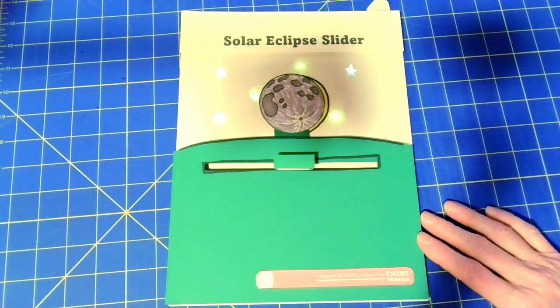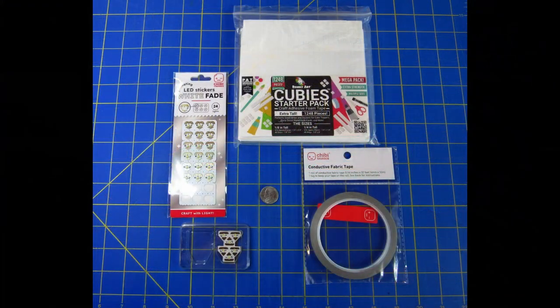For this project I used Chibitronics animating white fade stickers as well as their regular white LED stickers. I also used foam tape from Barely Art that comes in strips and cubes, the Chibitronics conductive fabric tape, and to make the connection on the slider switch I used a coin, in this case a nickel.